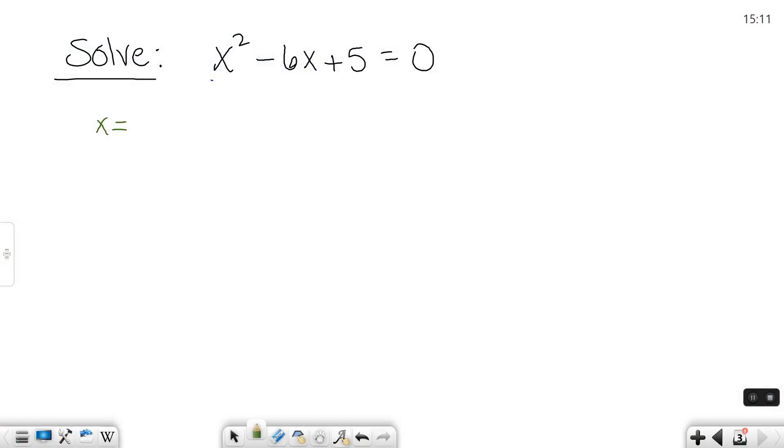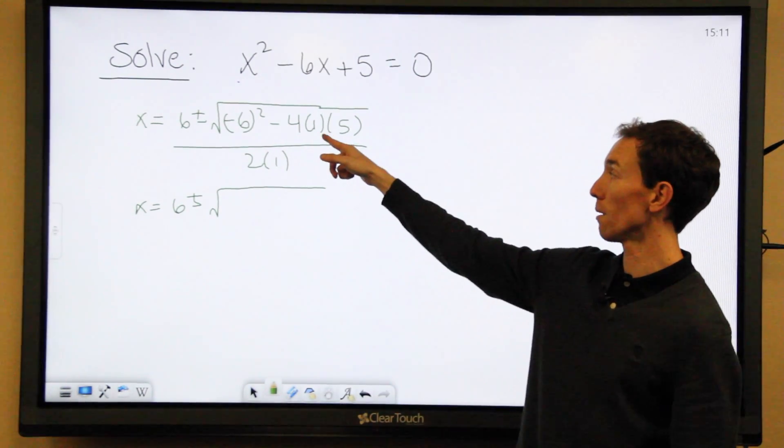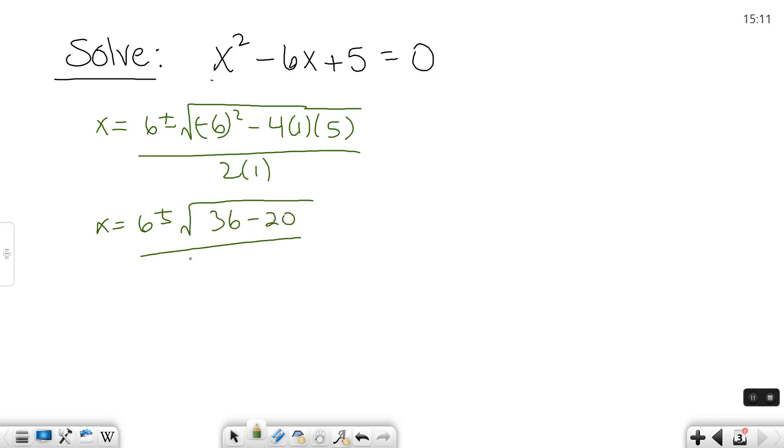So x equals negative b, the negative of negative 6 is positive 6, plus or minus the square root of b squared minus 4ac, all over 2 times a, and then start simplifying. So, negative 6 squared is 36 minus 4 times 1 times 5 is 20, and 2 in the bottom.